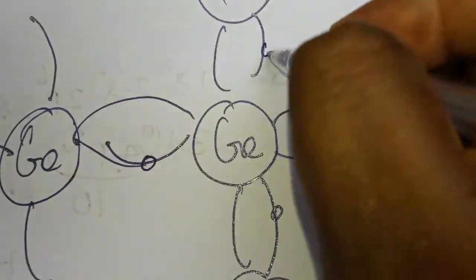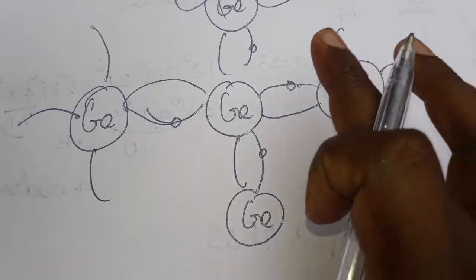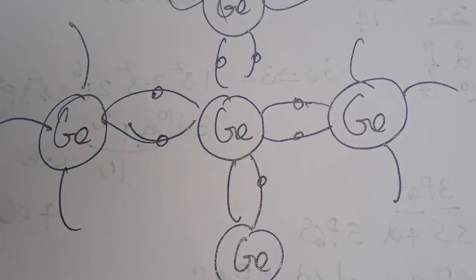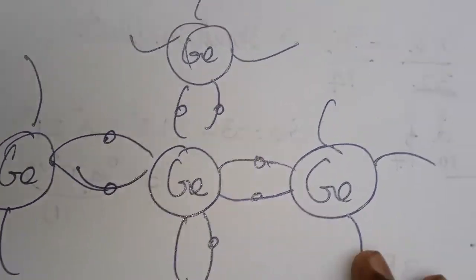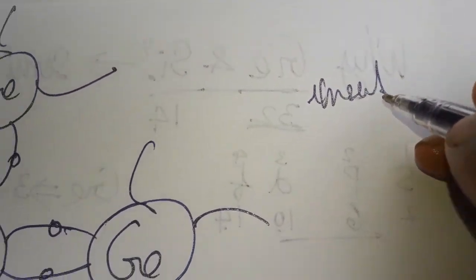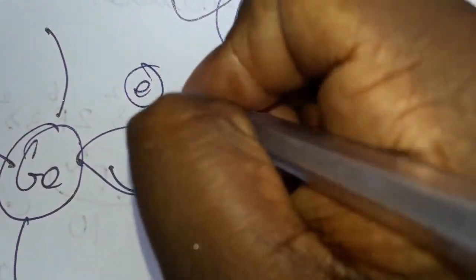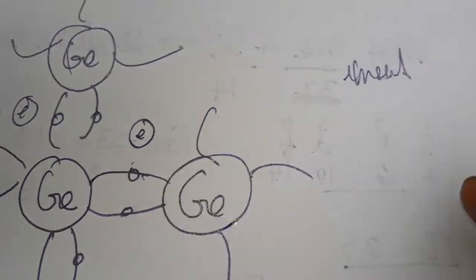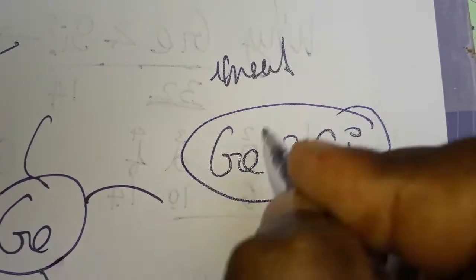The 4 electrons of the central germanium bond with 1 electron from each of the 4 neighboring germanium atoms, making the electron shell completely filled. With no extra electrons, it behaves as an insulator. But when heat or energy is applied, the bonds break and many free electrons are created — and that is why it acts as a semiconductor.